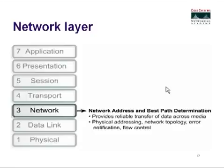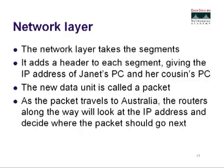The network layer provides reliable transfer of data across the media and handles best path determination. It takes the segments and adds a header to each one, giving the IP address of Janet's PC and her cousin's PC. Every single computer in the world has to have a unique IP address. Once that information is added, it's called a packet — we went from a segment to a packet. As the packet travels to Australia, routers along the way look at the IP address and decide where the packet should go next, passing it from router to router until it finally reaches her cousin's PC.